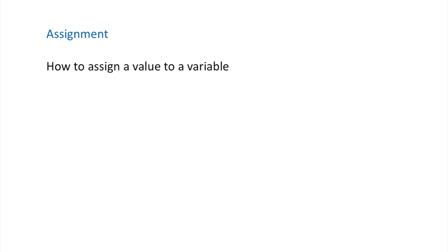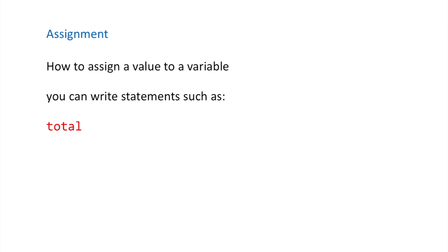With assignment, you write simple statements to assign something to a variable. For example, if you have a variable called total, in pseudocode you simply write the name of the variable — it's automatically declared for you, unlike some programming languages where you must declare it first. You use a simple arrow to indicate that something is being assigned to the variable, so you can assign the value five to total.